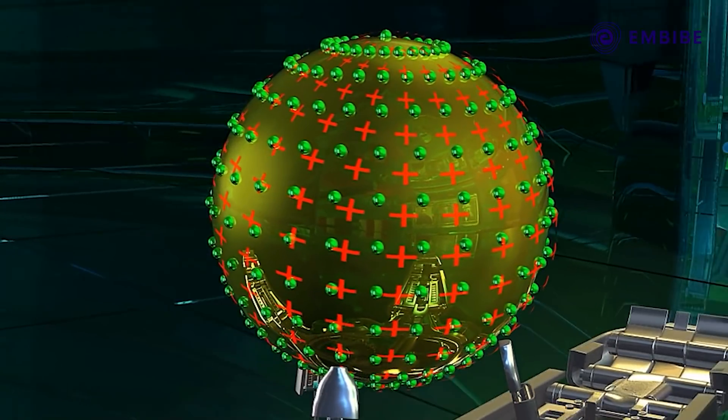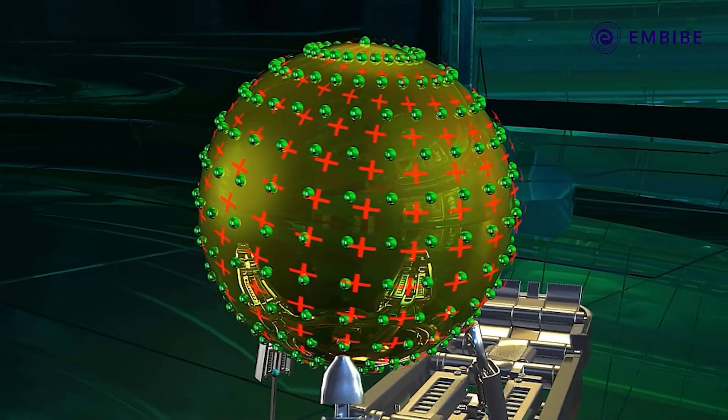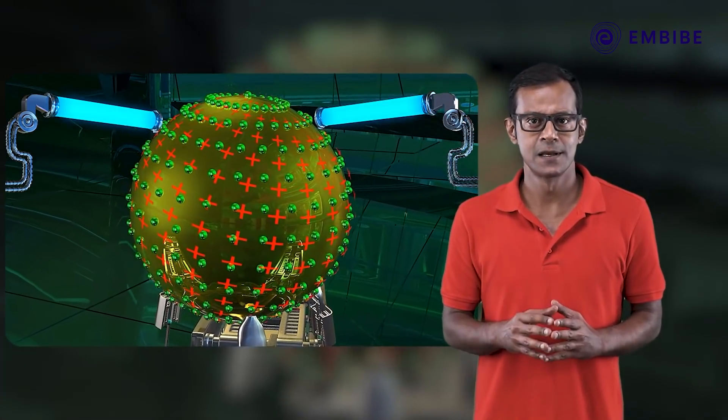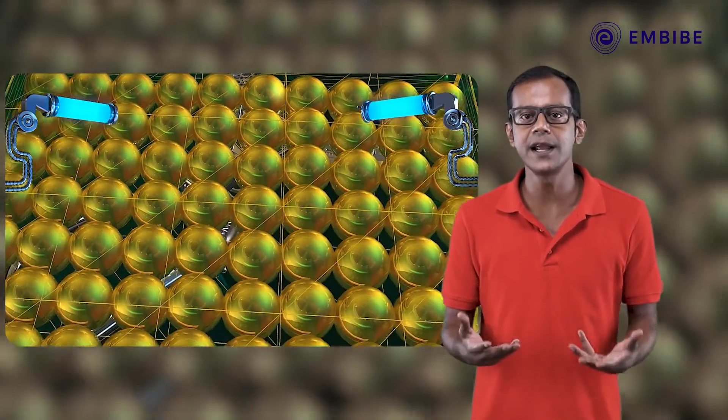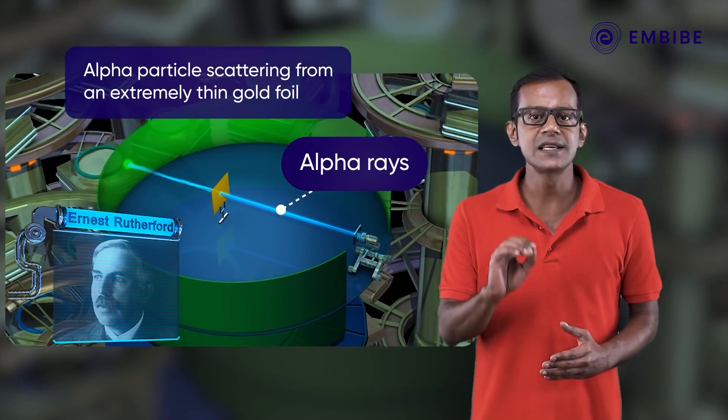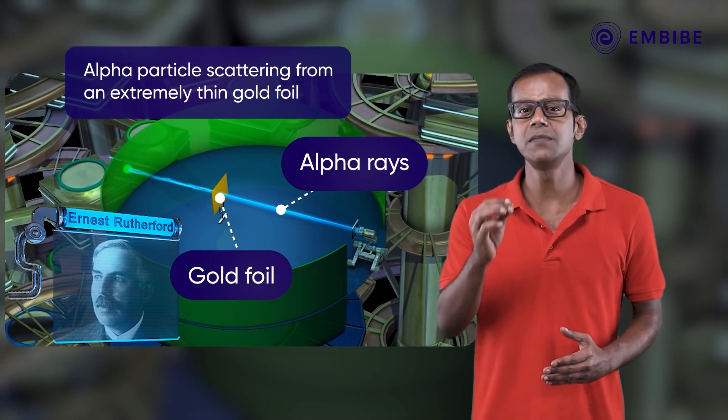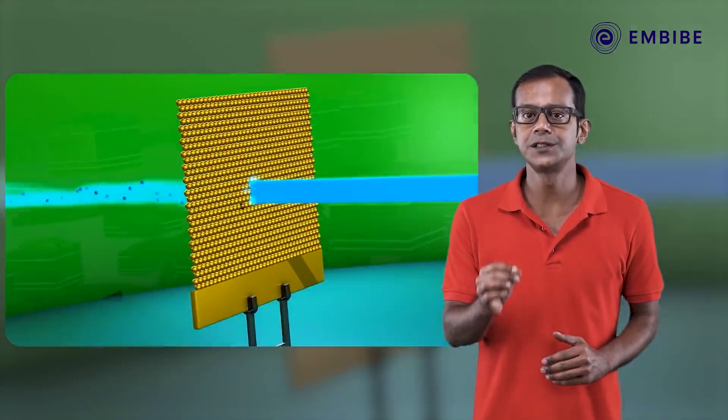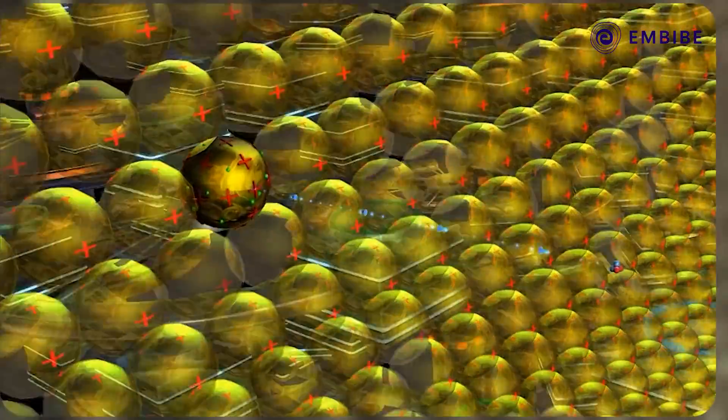This atomic model was popular until 1911. Two physicists, Geiger and Marsden, associates of great physicist Ernest Rutherford, studied alpha particle scattering from an extremely thin gold foil to understand the structure of an atom.